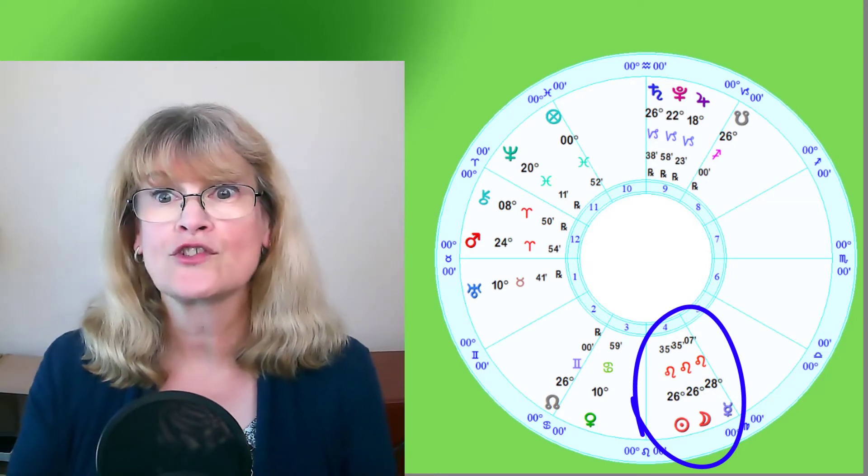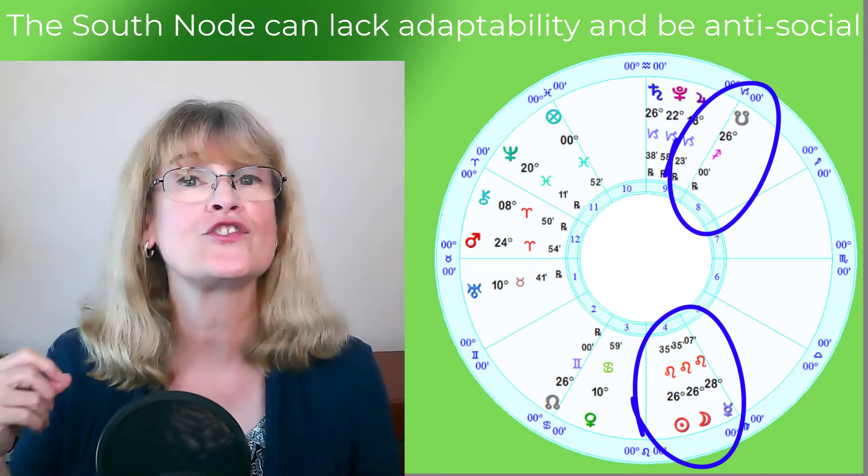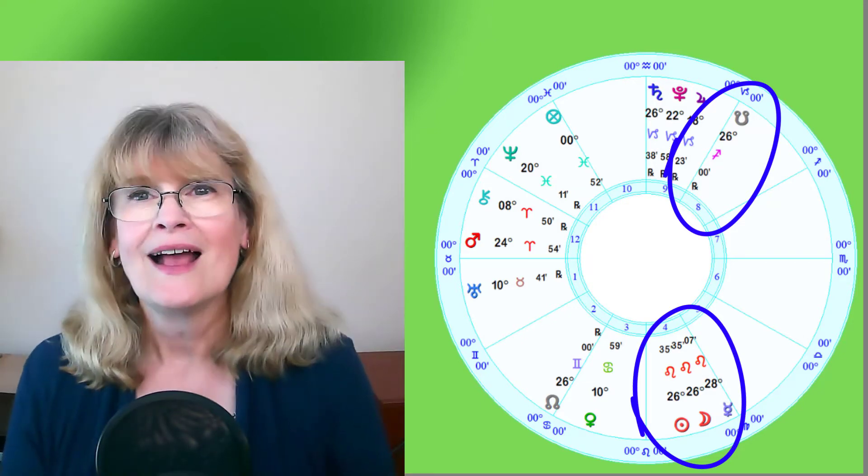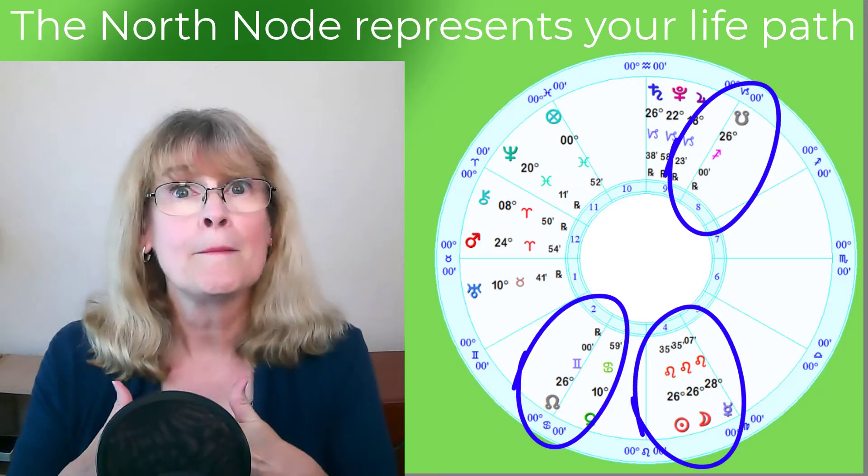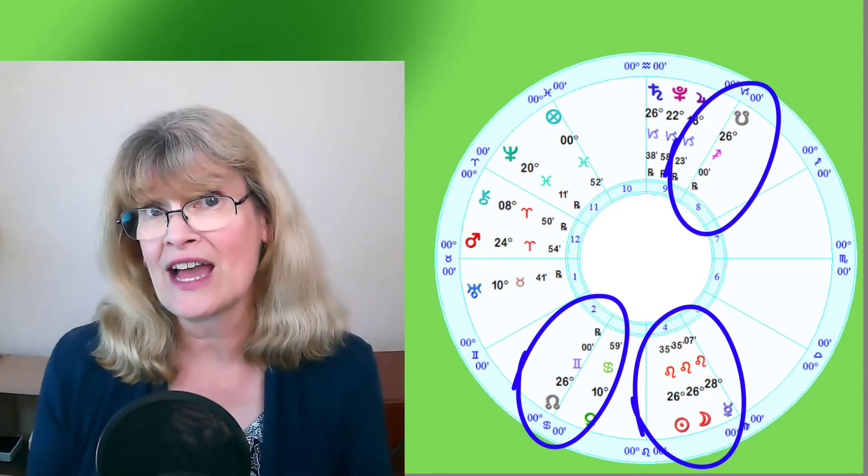We have the sun and moon making a trine to the south node, and that means it's very easy to go backwards, to go back into something you've done before. It's almost the default - you think you have to do something, and the first thing you think of is something you always do. Sometimes people will tell me 'this time is going to be different,' and then they tell me the exact thing they did last time. It's this combination of the mercury and the trine to the south node. The good news is you do have the sextile to the north node, and that means through consciousness, through mindfulness, you can move forward in your life.